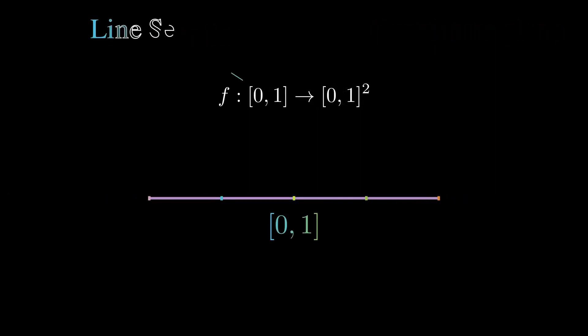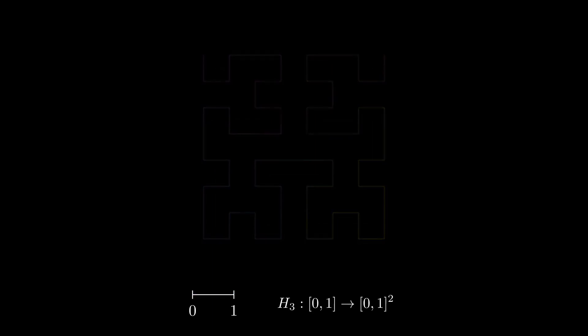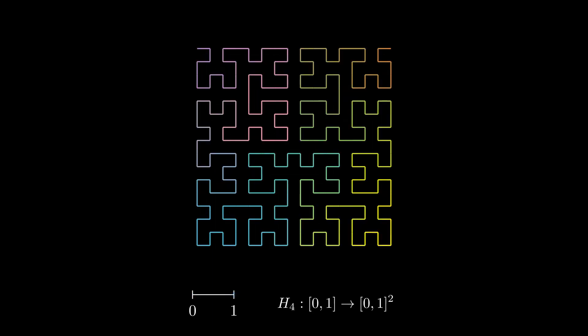So first we're going to look at the easier example of can the line segment fill the square. We're going to fill up the square by drawing these boxy little curves that get more and more detailed as we draw them. We never pick up our pencil, but we are allowed to cross over ourself. Now none of these functions